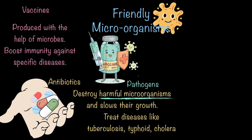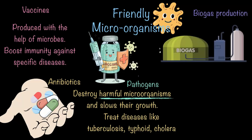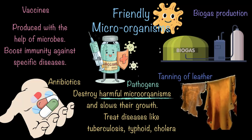Microorganisms even have industrial uses. For example, they are an essential component in biogas production. Biogas plants use farm waste, human urine, and feces, and thanks to microorganisms, they convert all this waste into biogas for energy and fertilizers for farming. Without these microbes, biogas production wouldn't be possible. They are also used in tanning leather. These tiny organisms, invisible to the naked eye, are very much involved in our daily lives to make it better in so many ways.